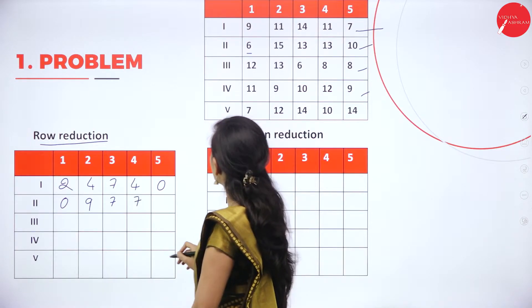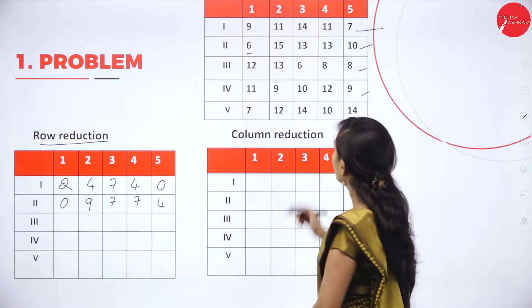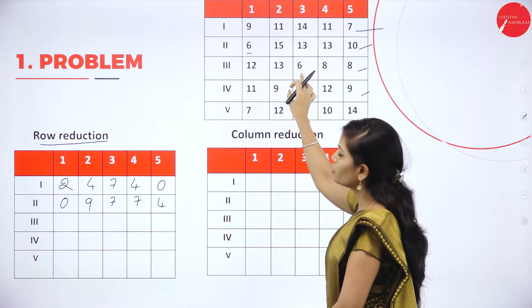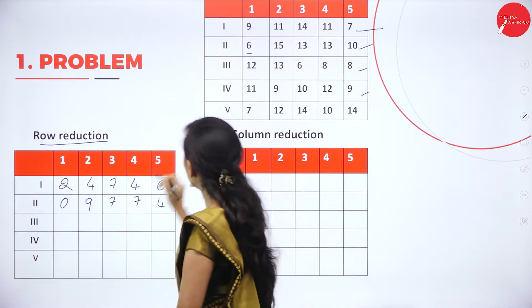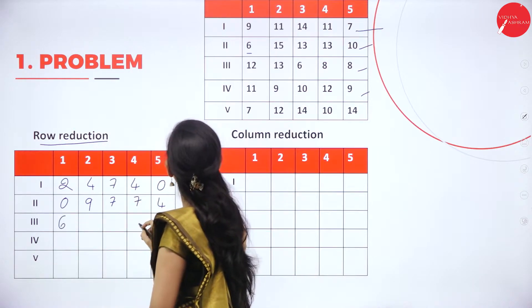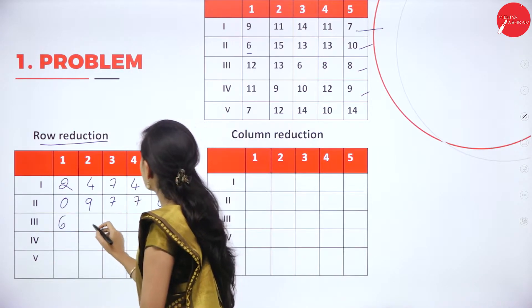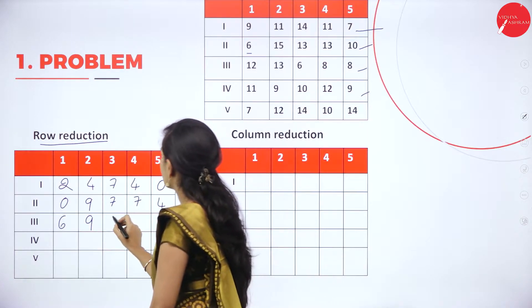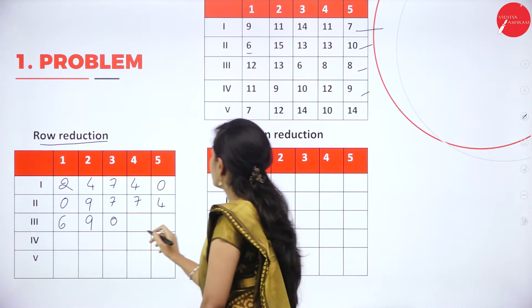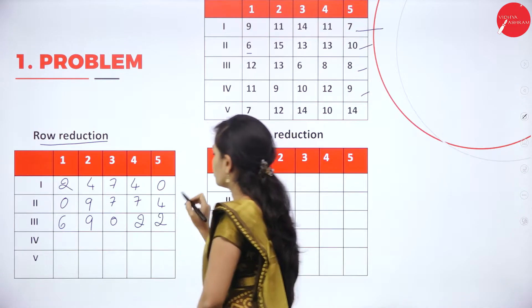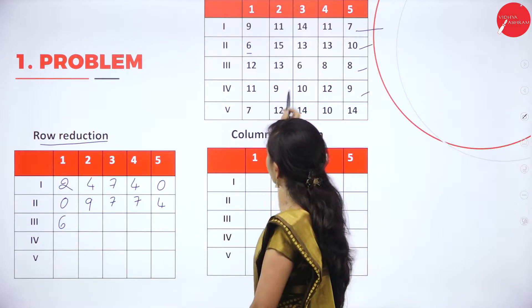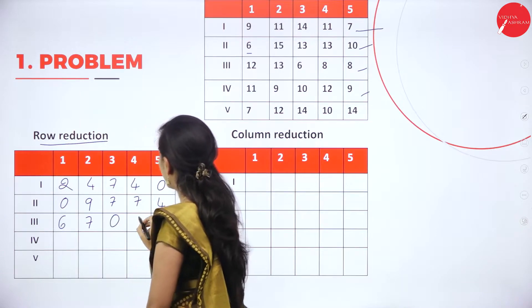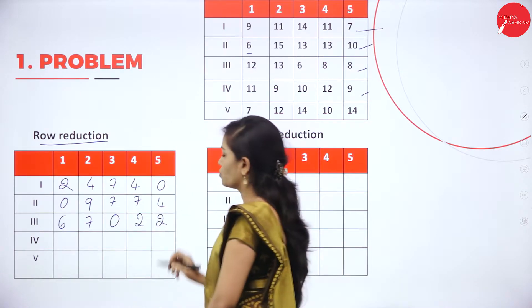And 10 minus 6 is 4. In the third row the least value is 6. So 12 minus 6 is 6, 13 minus 6 is 9, and 6 minus 6 is 0, 8 minus 6 is 2, 8 minus 6 is 2, 13 minus 6 is 7, 6 minus 6 is 0, 8 minus 6 is 2, 8 minus 6 is 2.